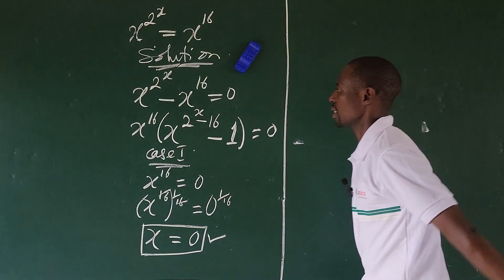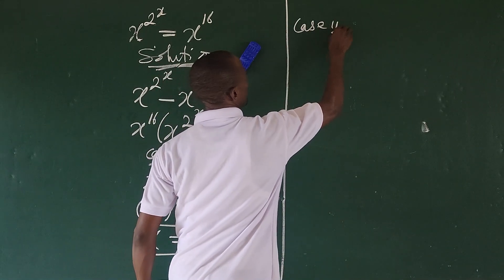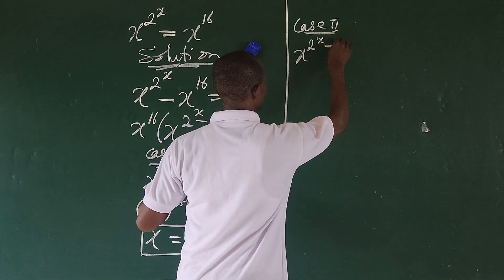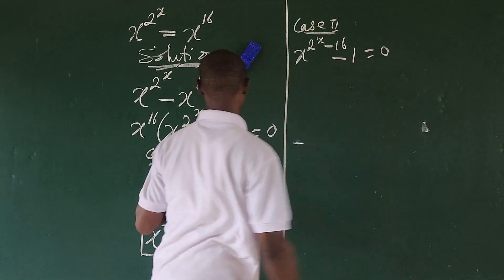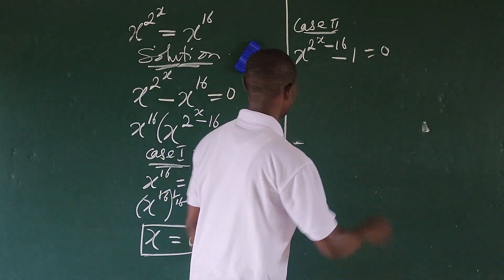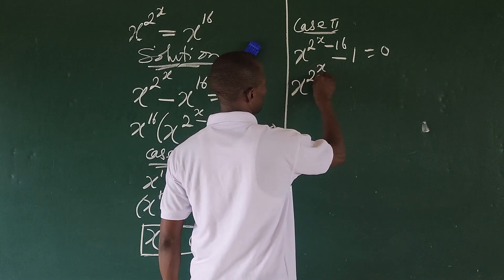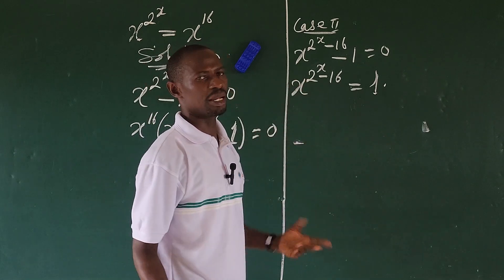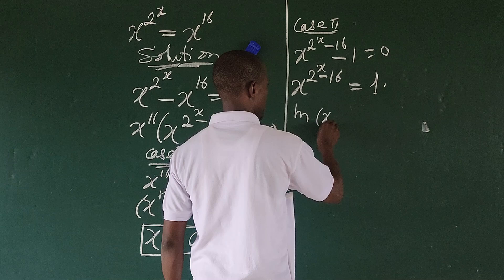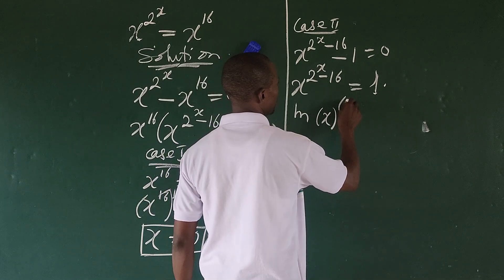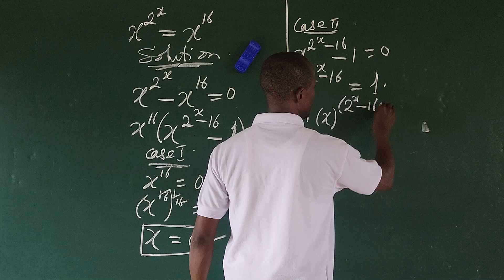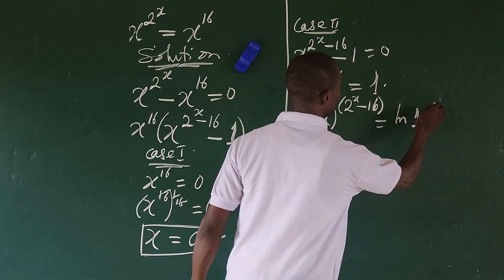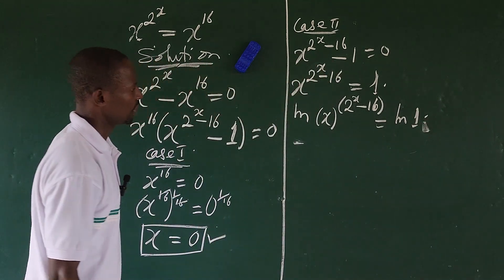Now for Case 2, we have x to the power of (2^x minus 16) minus 1 equal to zero. Moving the 1 to the other side gives x to the power of (2^x minus 16) equals 1. We take the natural log of both sides: ln of x to the power of (2^x minus 16) equals ln of 1.